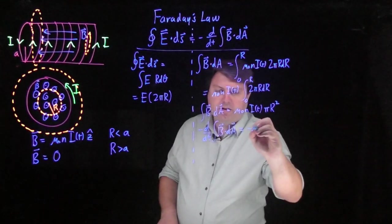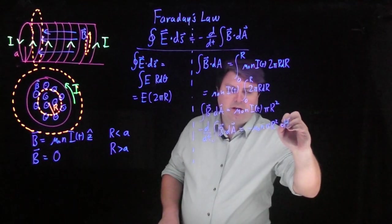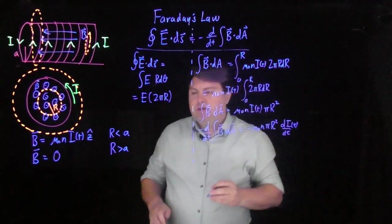So we get this minus sign from here, mu naught n pi r squared times di of t dt.